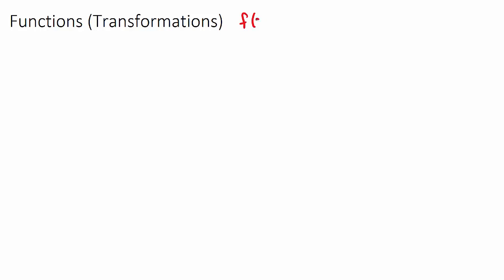In this video we're going to look at functions and transformations of functions. For the sake of this video and the examples we're about to do, I'm going to say that we have some function f(x), and in this function we know a coordinate that our function will pass through — let's say that coordinate is (2, 2). So we know that f(2) equals 2, because when x is 2, y is also 2.